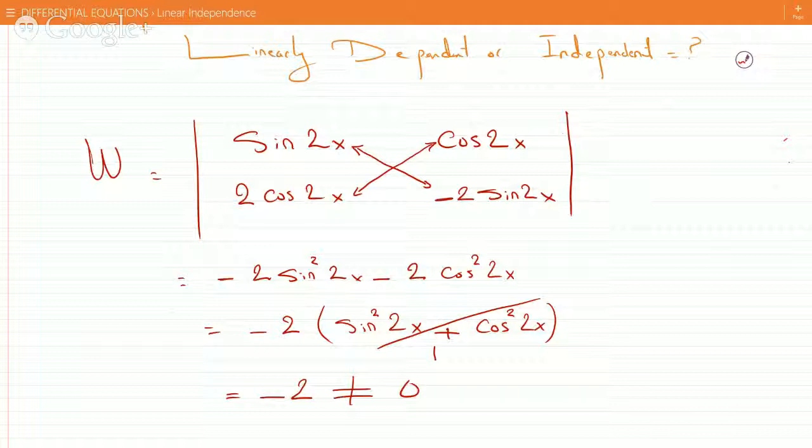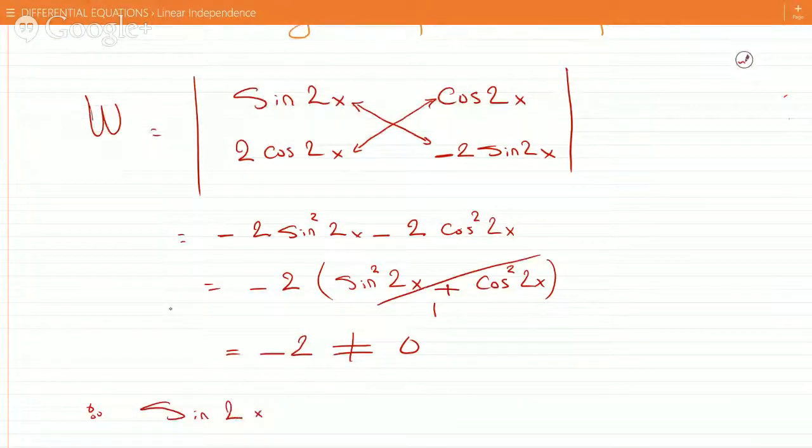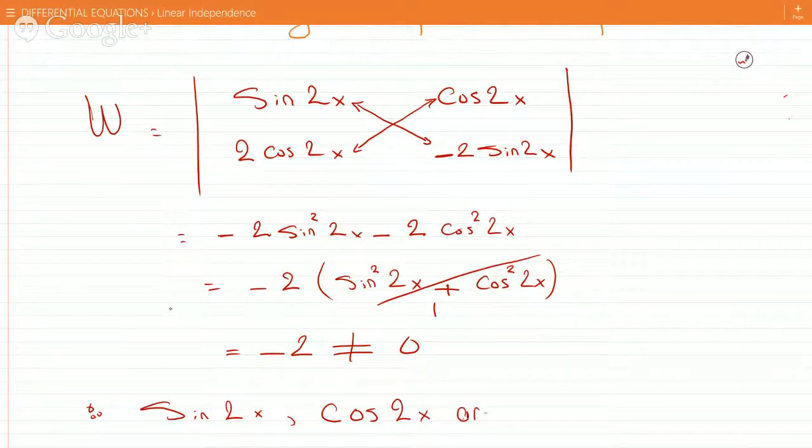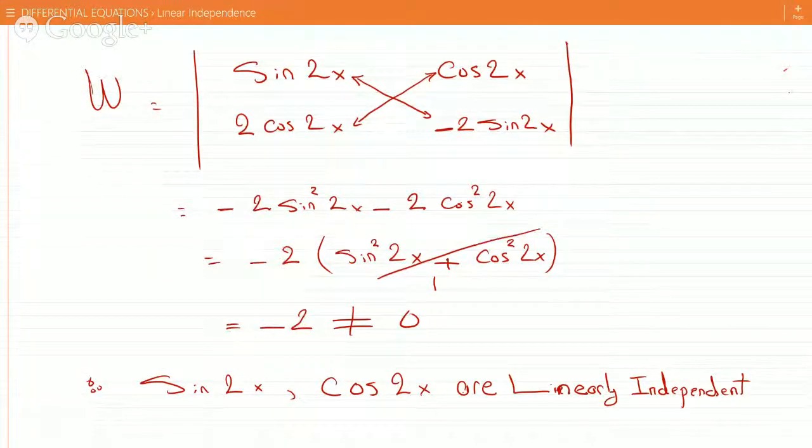Therefore, they're certainly linearly independent. Because the fact that the Wronskian does not equal 0 immediately means that they're linearly independent. And that's basically it.